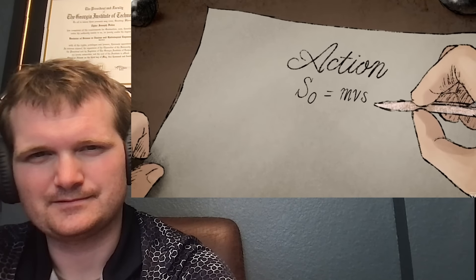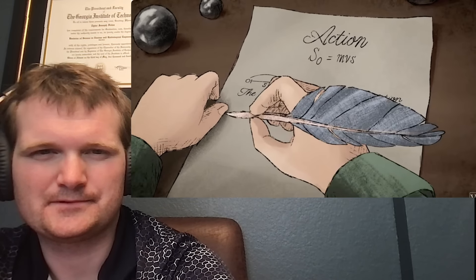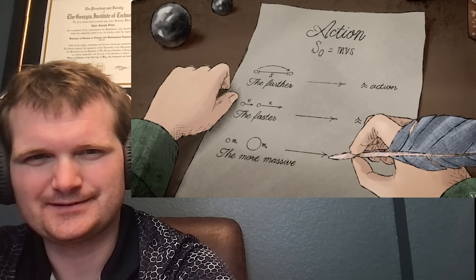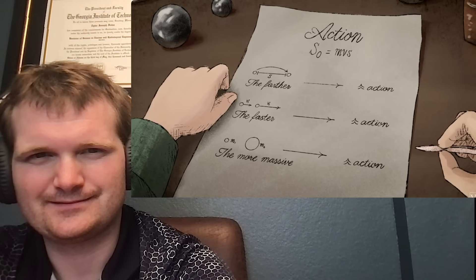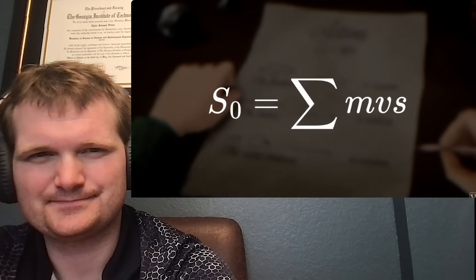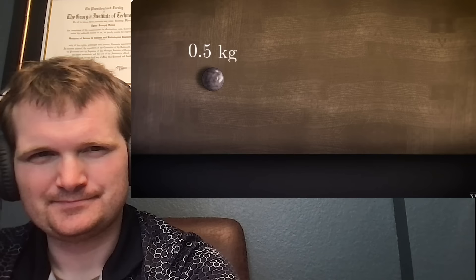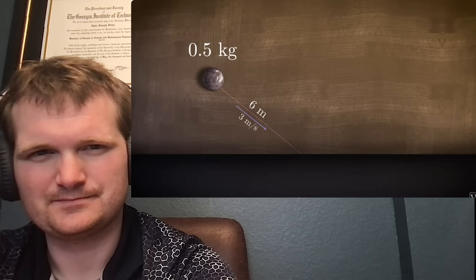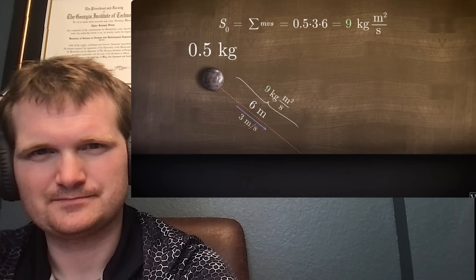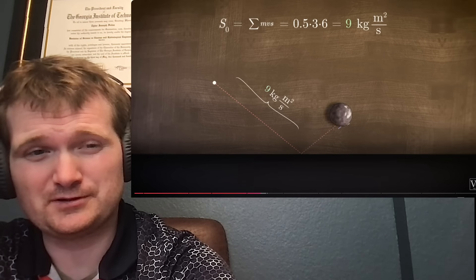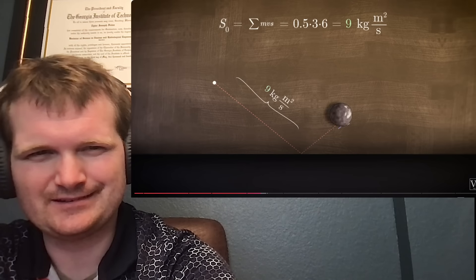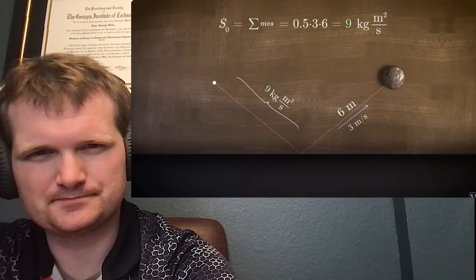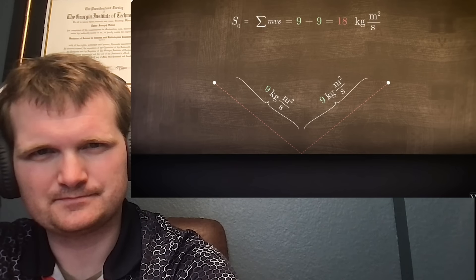It is mass times velocity times distance. His thinking went something like this. The farther something travels, the greater the action. The faster it goes, the greater the action. And if it's a particle, then the more massive it is, the greater the action. If there are multiple segments to the journey, then the total action is just the sum of the mass times velocity times distance for each segment. To see the principle in action, here is a super simple example with no friction or losses. Imagine a 0.5 kilogram ball is rolled over the ground for 6 meters at 3 meters per second. Then that would be 9 units of action. Kilograms meters squared per second. So, angular momentum.